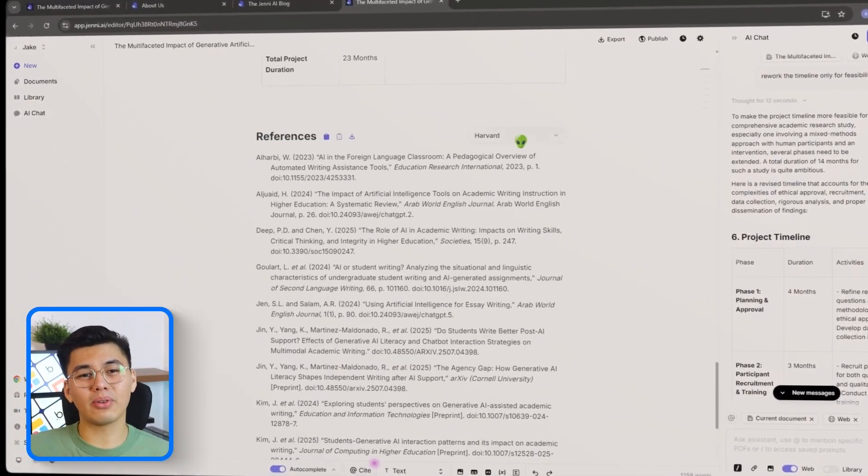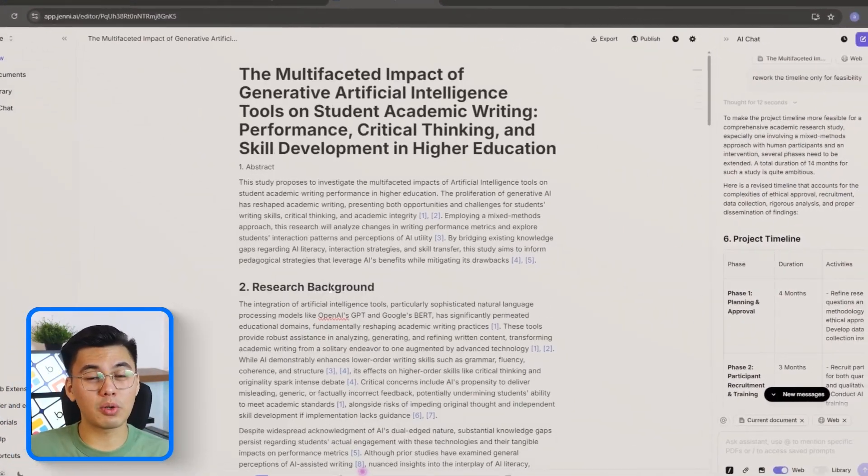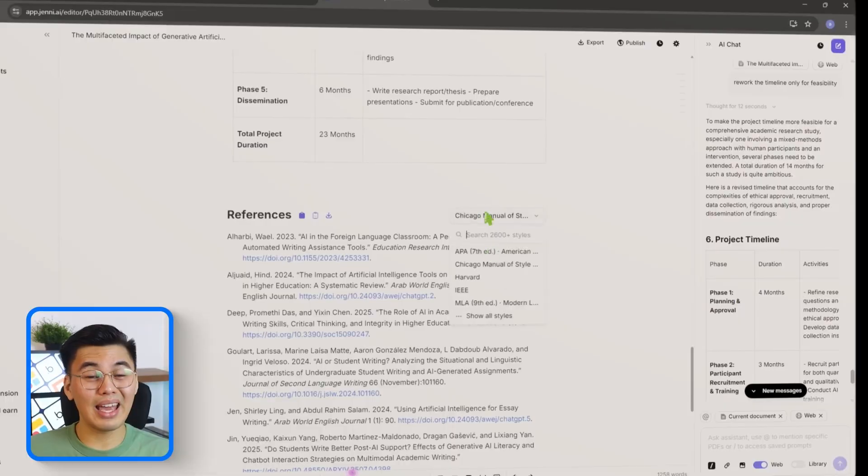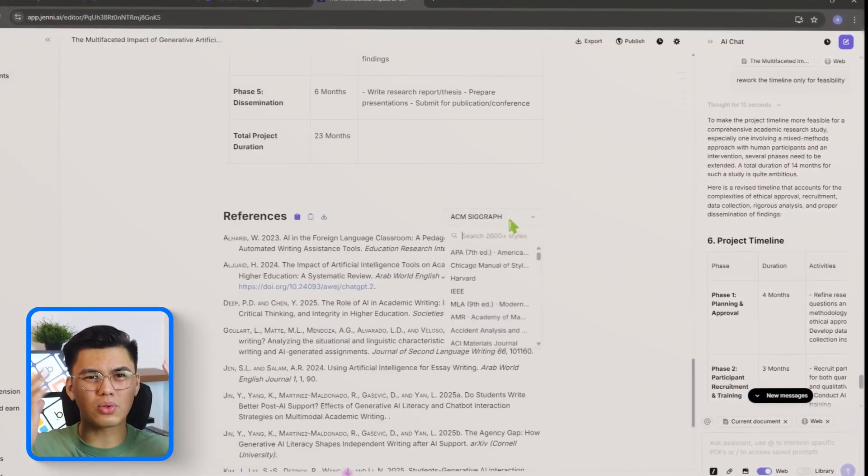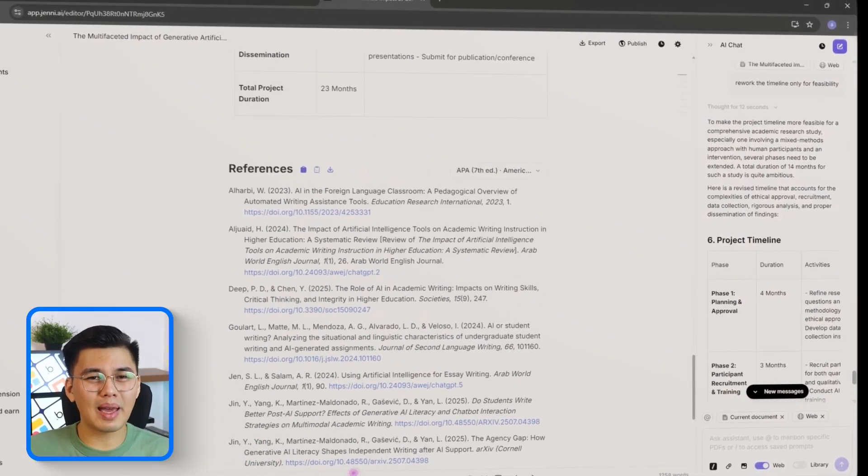we're going to look at how Jenny can make citations easier without replacing the need to double-check your sources. We'll open the citation panel and explore how quickly we can switch between APA, MLA, and Chicago styles - something that normally means juggling separate tools or constantly Googling formatting rules.